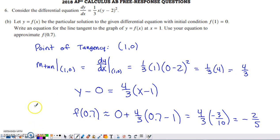Part B talks about a particular solution to the differential equation that has this initial condition. So, when x is 1, the corresponding y value is 0. Write an equation for the line tangent to the graph of this solution curve at x equals 1. Use your equation to make an approximation for the function value at 0.7.